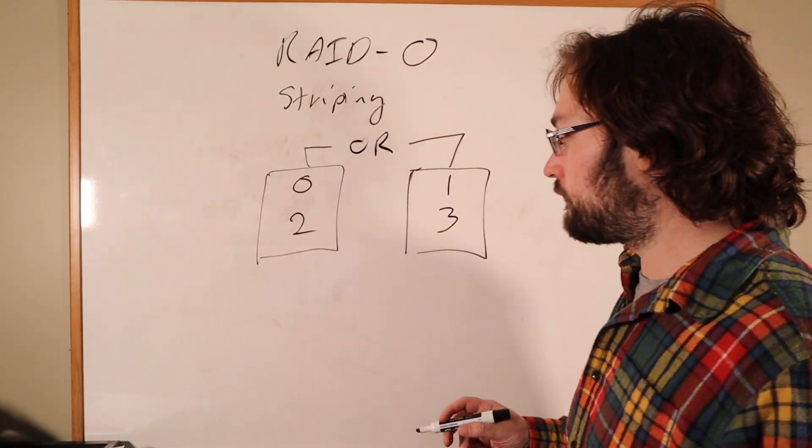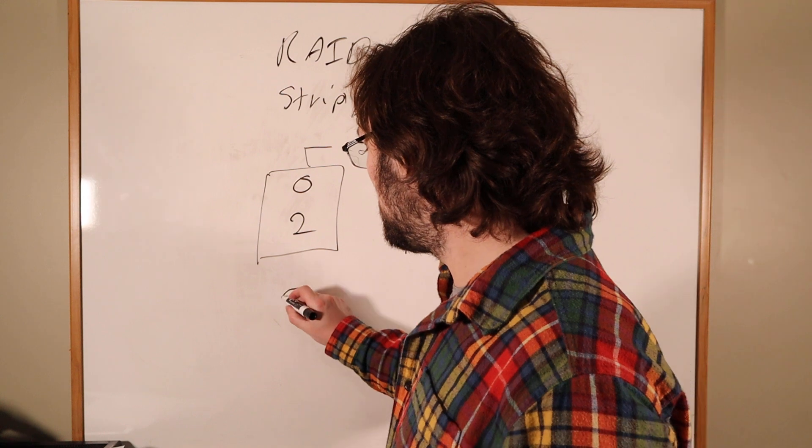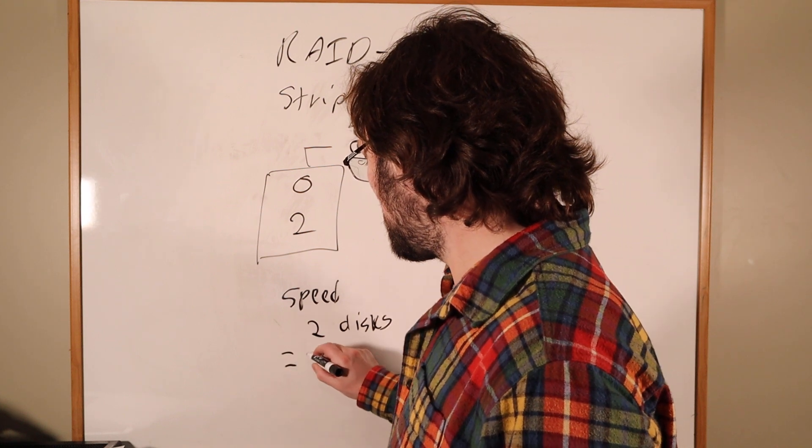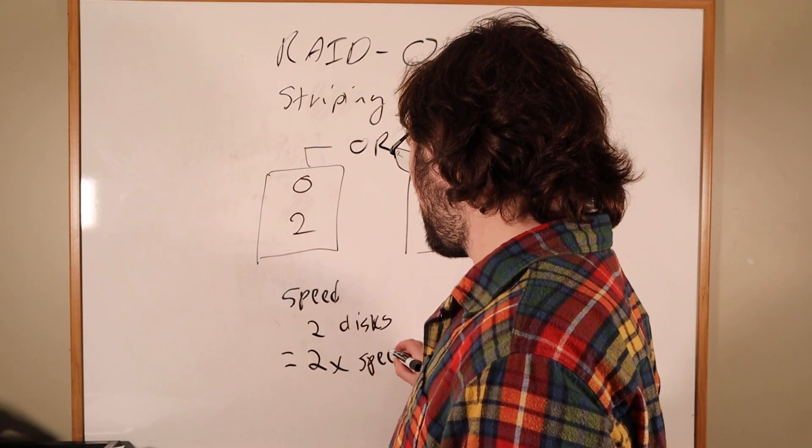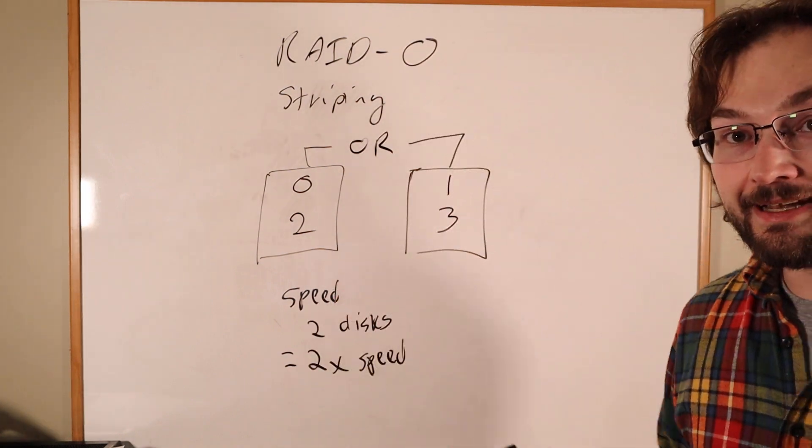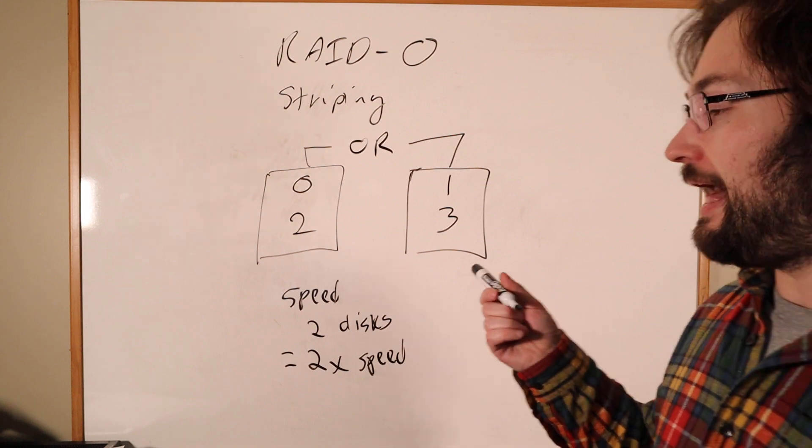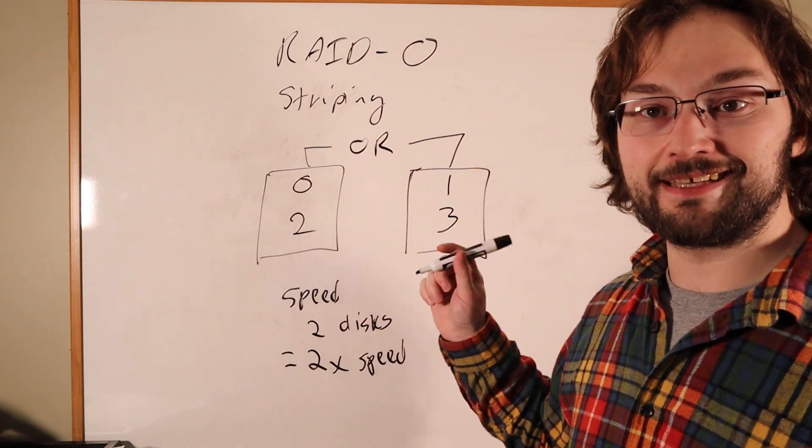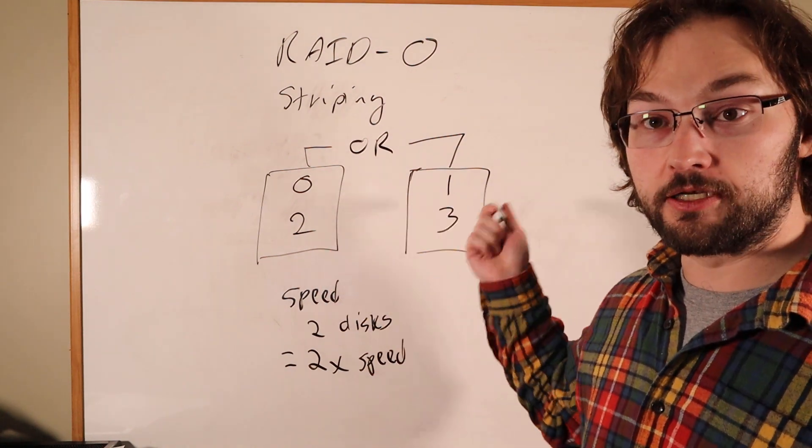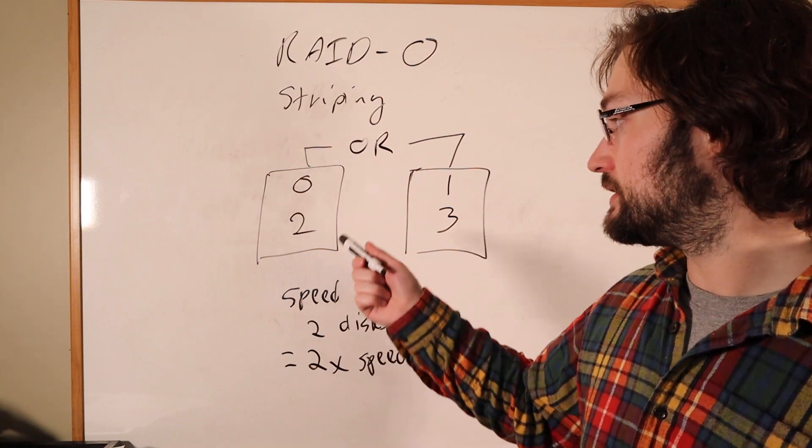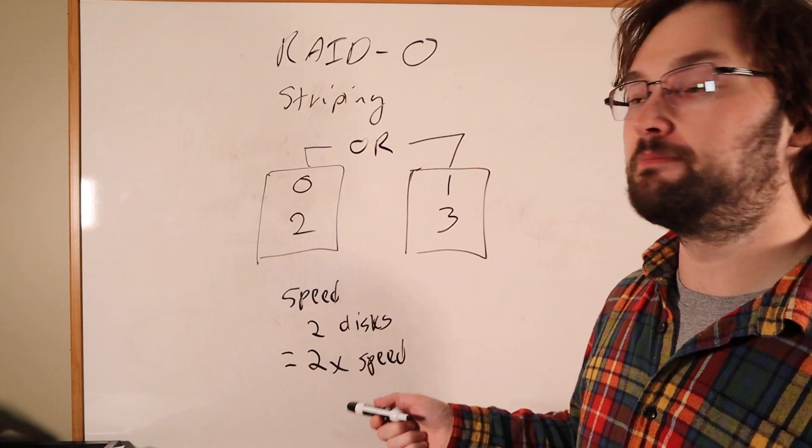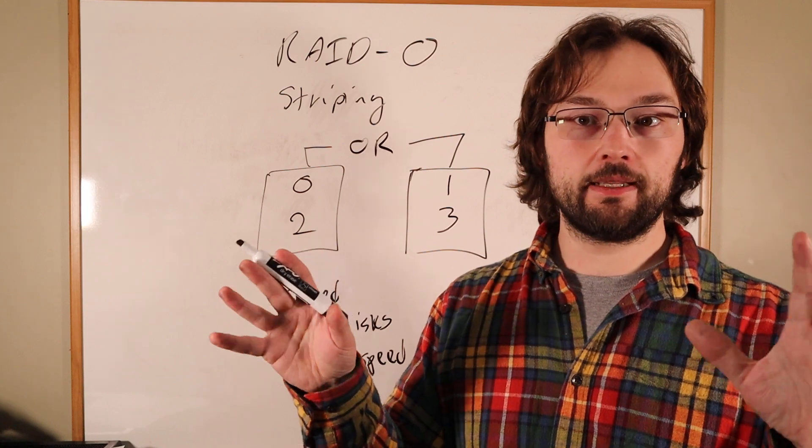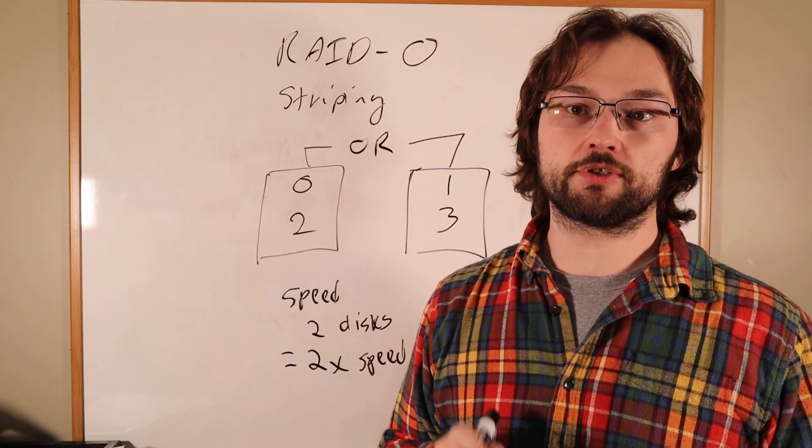Now this doubles the amount of space we had, but that's not that exciting unless for some reason we're storing files that are individually bigger than a disk. That sometimes comes up, but not all that frequently. Mainly the reason people do this is for performance. Because of the way striping works, if we're writing enough data to the disks or if we're reading enough data from the disks, having two disks is going to make us go twice as fast. The reason for that is because we can read from both disks in parallel.